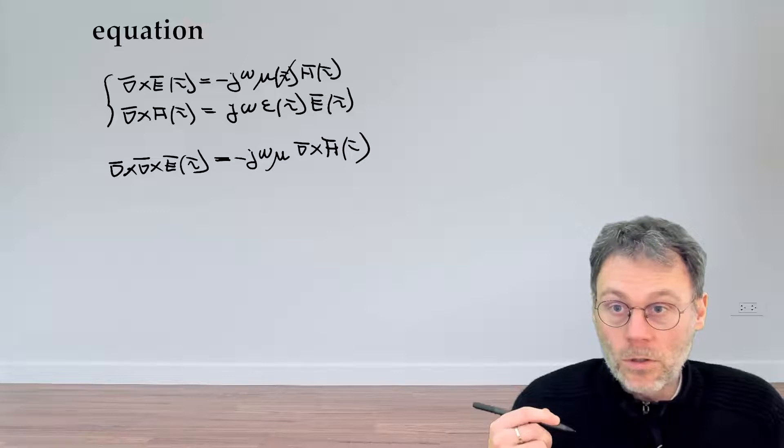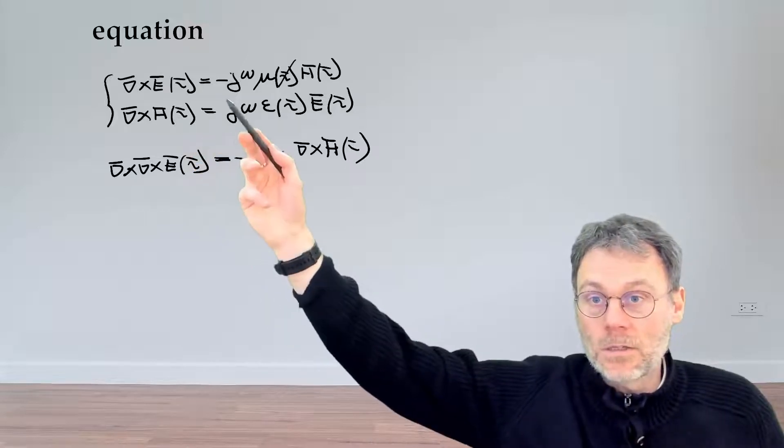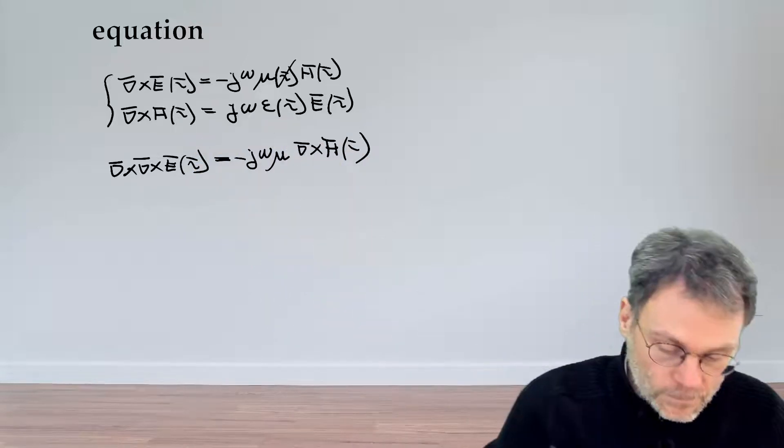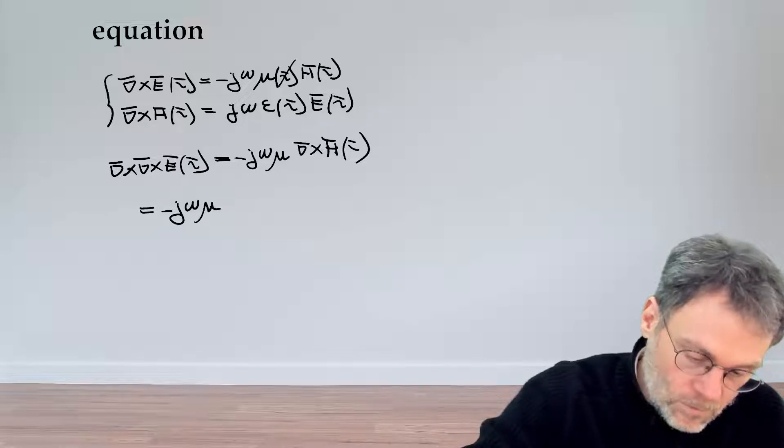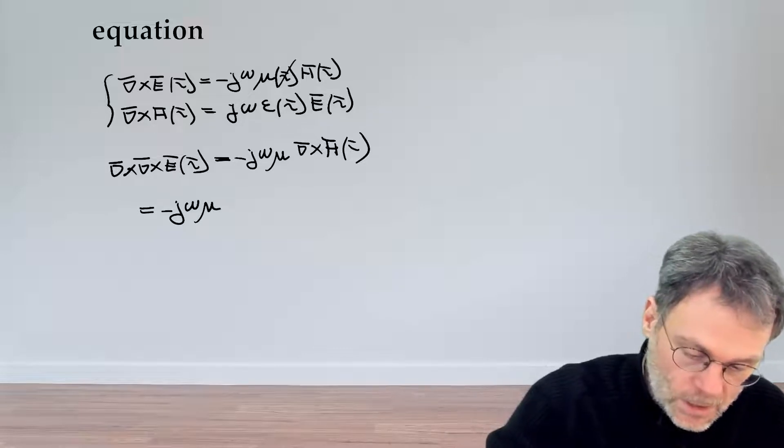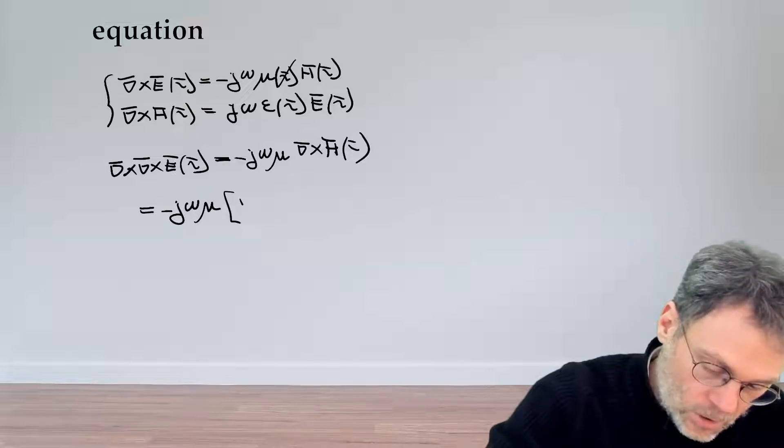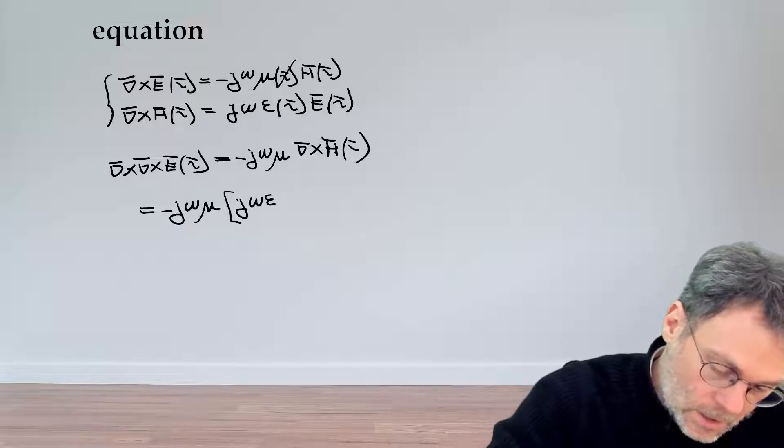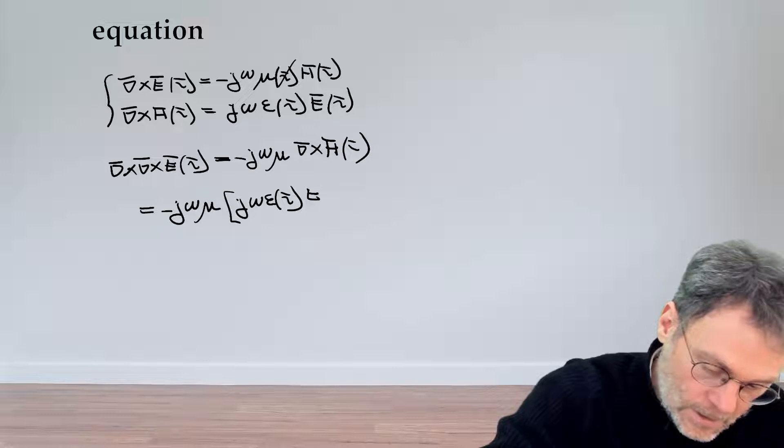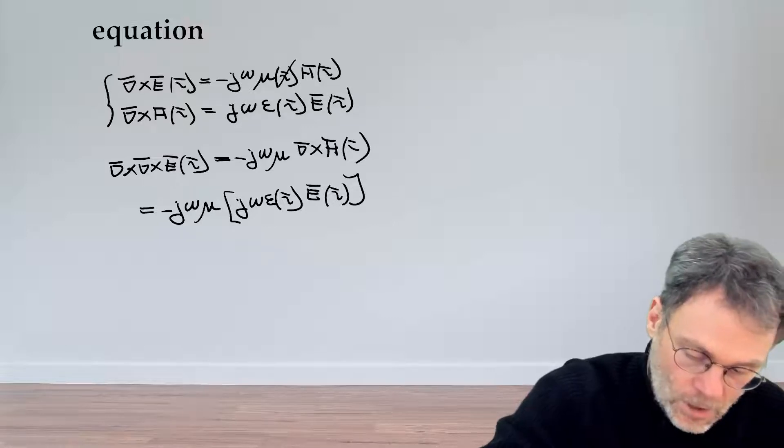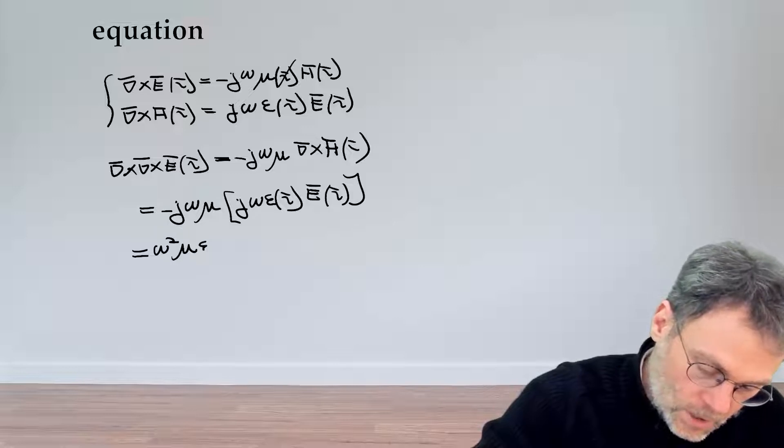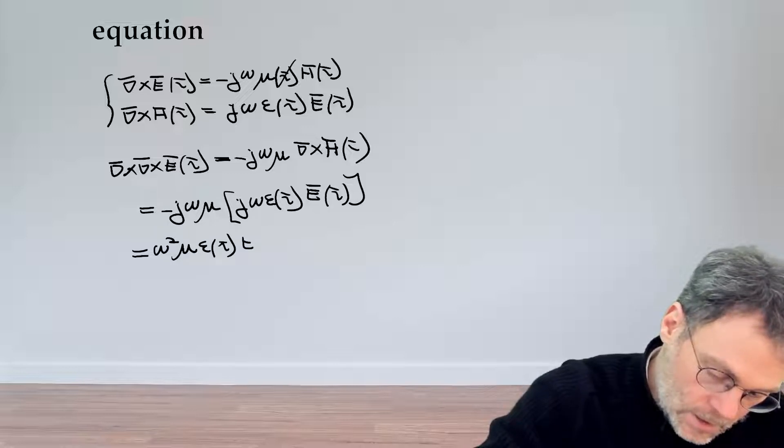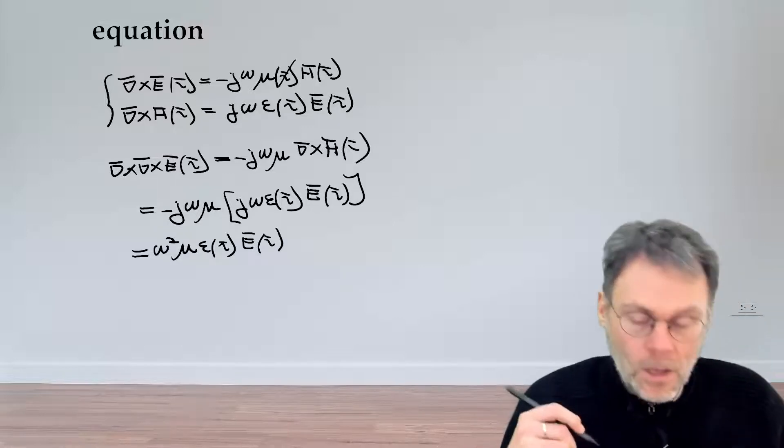Luckily, we do know what the curl of the magnetic field is. It's right here in the second equation. So we can write that this is minus j omega mu, and then for the second equation, we have j omega epsilon_r E of r, which then gives us omega squared mu epsilon E of r.